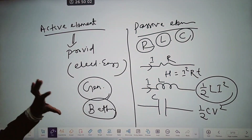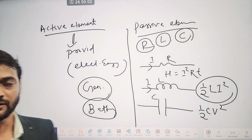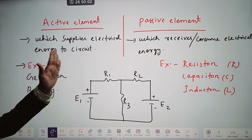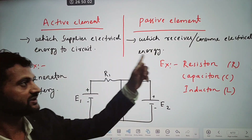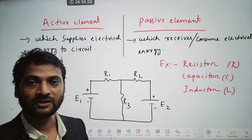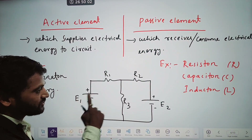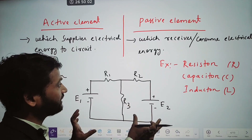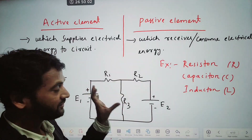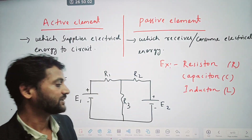So to summarize: generator and battery are active elements; inductor, capacitor, and resistor are passive elements. The active element supplies electrical energy to the circuit; the passive element receives electrical energy. For example, in a circuit with two batteries E1 and E2 as active elements and three resistors R1, R2, R3 as passive elements — that circuit has two active elements and three passive elements.